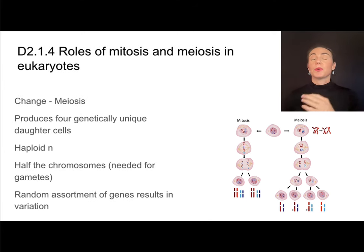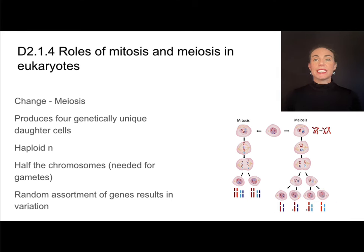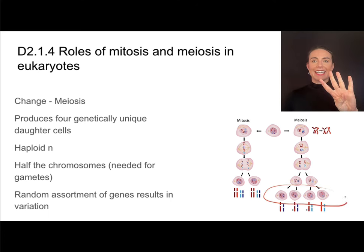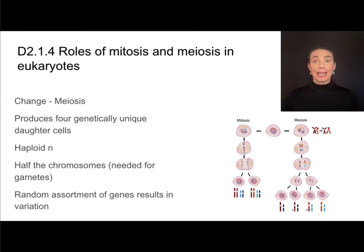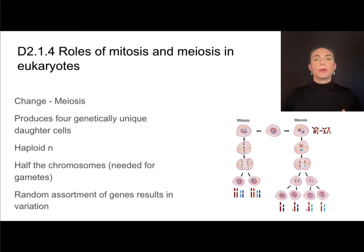Meiosis, on the other hand, is a great representative of change, because the daughter cells produced by meiosis are not identical. Meiosis is a process used for creating gametes, and it produces not two but four cells at the end. These four cells are all haploid — meaning the chromosomes do not come in pairs — and we use the shorthand abbreviation little n. Meiosis halves the chromosome number. There is also a random assortment of genes, so all gametes are not only haploid but genetically unique, giving sexually reproducing organisms a lot of variation.